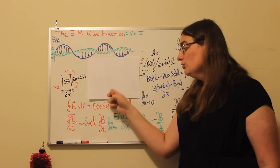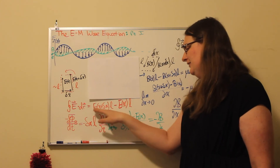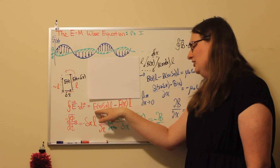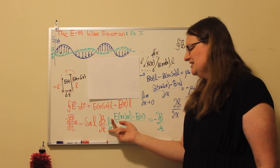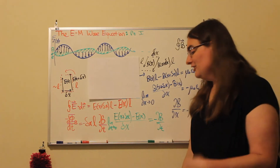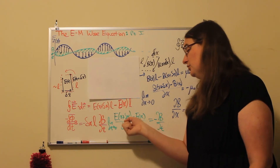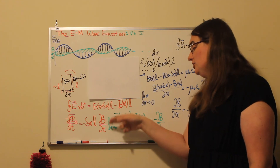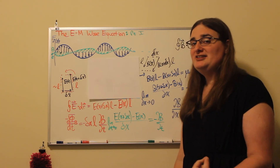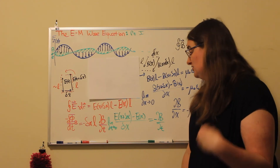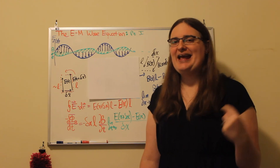Equating the two pieces as Faraday's Law requires, the arbitrary length L cancels from all terms. Dividing both sides by delta X gives a function at X plus delta X minus the function at X, all divided by delta X. Taking the limit as delta X goes to zero is exactly the definition of the partial derivative of electric field with respect to position. So the partial derivative of E with respect to X equals minus the partial derivative of B with respect to time — the first piece we file away for the wave equation.